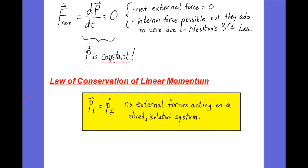If P is a constant, that means the initial momentum is the same as the final momentum. We call this the law of conservation of linear momentum, and it holds true when there are no external forces acting on a closed, isolated system.